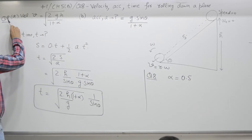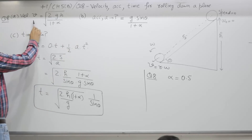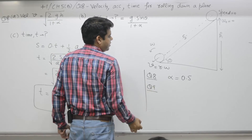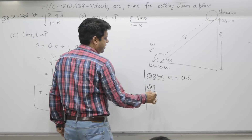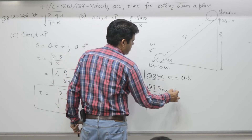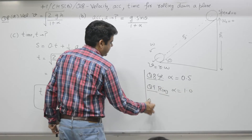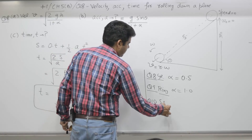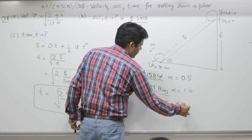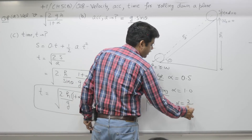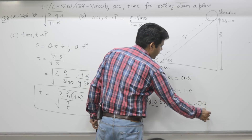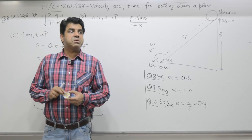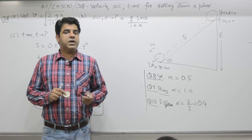For question number 9, the object is a ring, and α = 1. For question number 10, the object is a solid sphere, and α = 2/5 (0.4). For a hollow sphere (football), α = 2/3. For a solid sphere, α = 2/5.